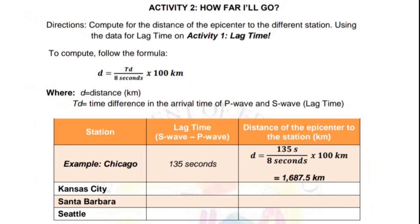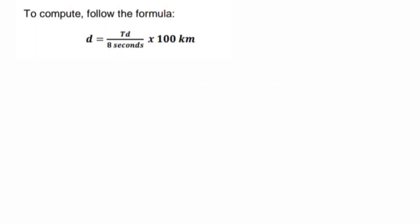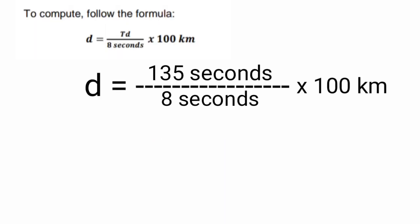Next is determining the distance of the epicenter to the station. To compute, let's use the formula: D is equal to TD over 8 seconds times 100 kilometers. And let's use the lag time, which is 135 seconds. Now, how do we solve for the distance of the epicenter? To compute, follow the formula.